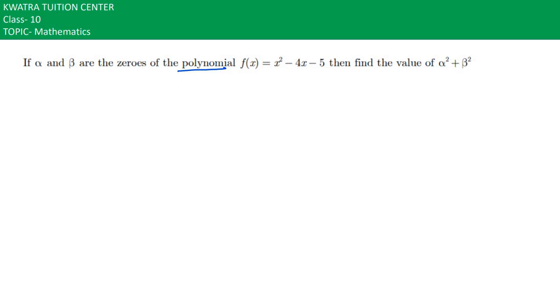Here we have middle term splitting. Using middle term splitting, we can write this as x² - 5x + 1x - 5.